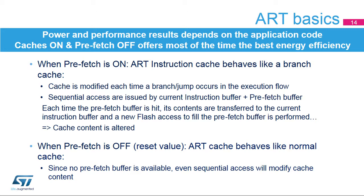The power and performance trade-off must be evaluated for each application to know whether it is better to enable or disable the pre-fetch buffer. For most applications, enabling the pre-fetch buffer allows a slight increase in performance, but with higher consumption. Most of the time, the best energy efficiency is provided with caches enabled and the pre-fetch buffer disabled, as it often reduces the number of flash memory accesses.